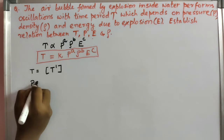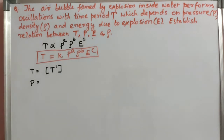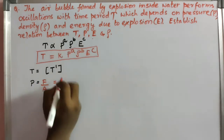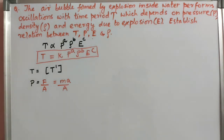Next, pressure. The dimensional formula of pressure — if you don't know it, you should know at least any basic formula regarding that physical quantity. Pressure is defined as force per unit area. Force is defined as mass into acceleration divided by area. I know the basic formula of pressure is force per unit area, and force equals mass into acceleration. So the formula for pressure is mass into acceleration divided by area.